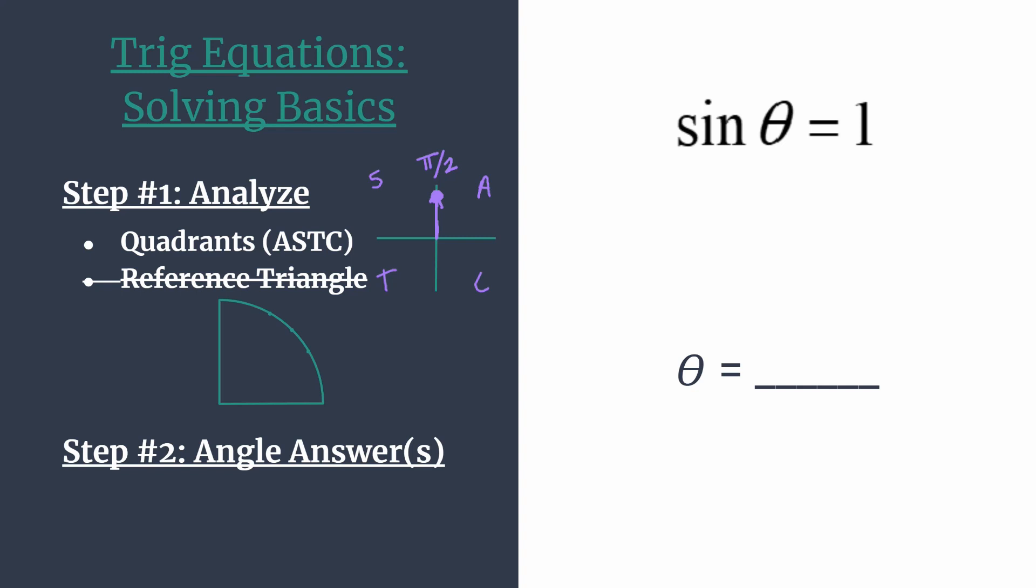So again, no reference triangle needed. You don't even have to do that part because your angle's on an axis. We've already said that this is the only place where you're going to have a value for positive one as the y coordinate. And so step two, we're really just recording this as our final answer.